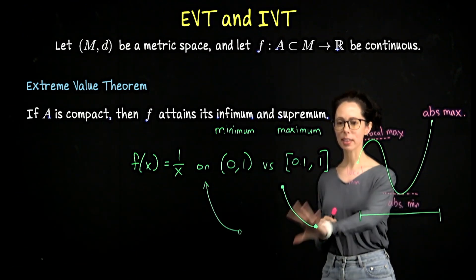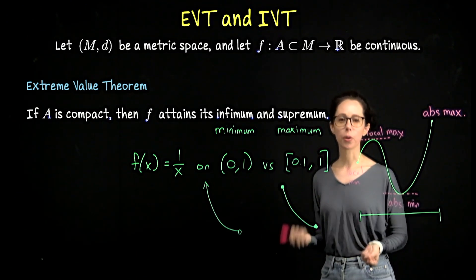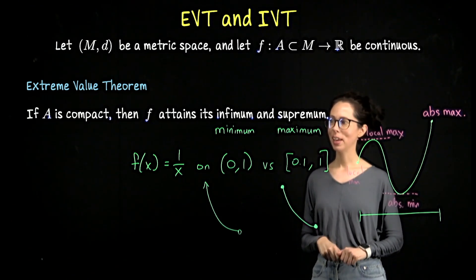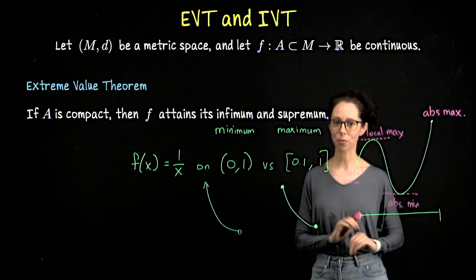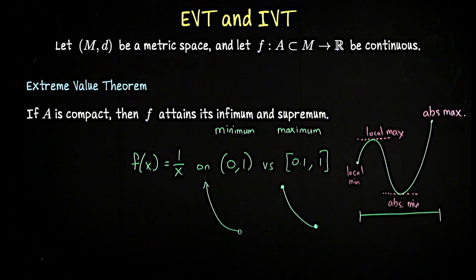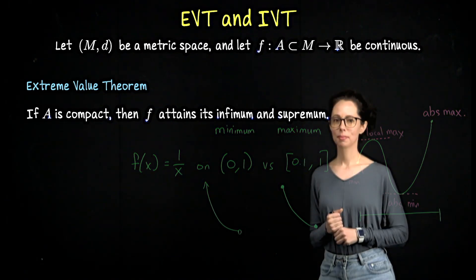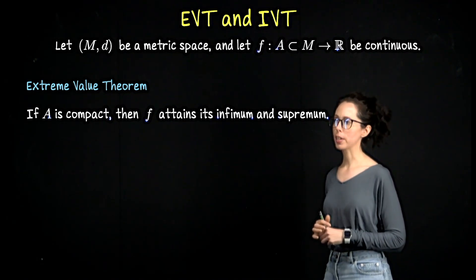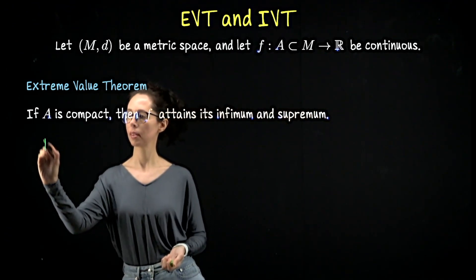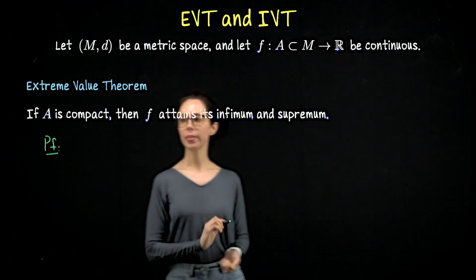The extreme value theorem comes up in optimization. I'm going to erase this and then we will do the proof. It's pretty fast because we have a lot of prior results about compact sets and continuity that we can appeal to. Then we will move on to an even faster proof of the intermediate value theorem.